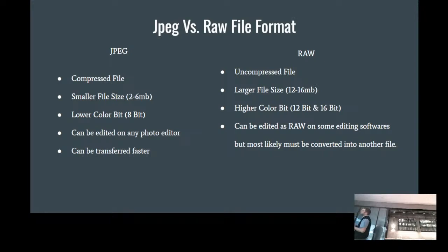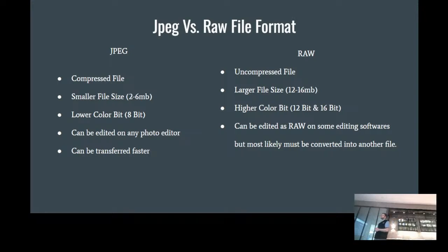While the RAW has more to play with, that also makes it a larger file size. A standard JPEG is about two to six megabytes, but shooting RAW means double to quadruple the megabytes. If you have a lower-gigabyte SD card and you're shooting RAW, you'll want to upgrade to something with more storage because it gets used up much quicker. RAW is also uncompressed, which means it has a higher color bit — a JPEG has an 8-bit color rating, while RAW gives you more to play with in the color spectrum.